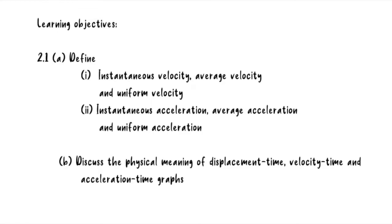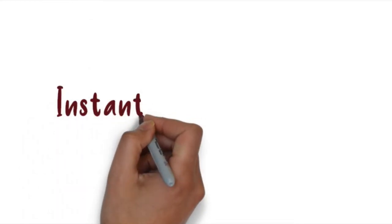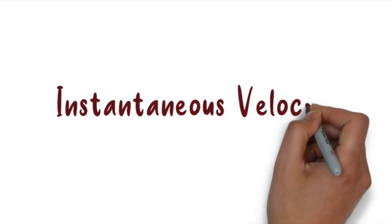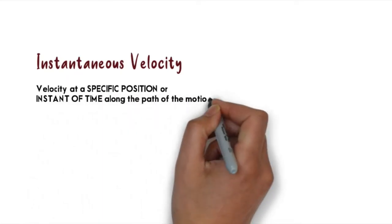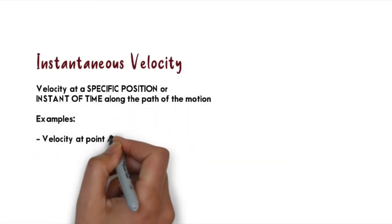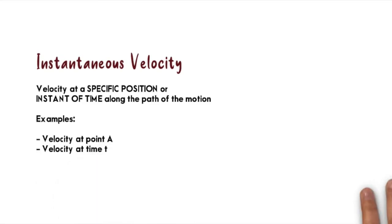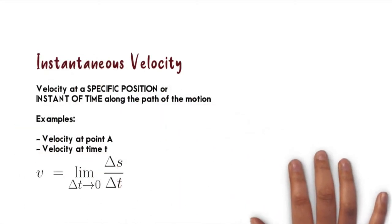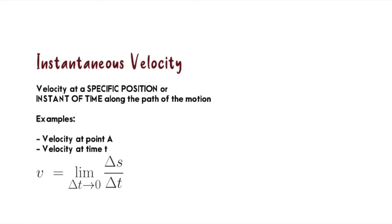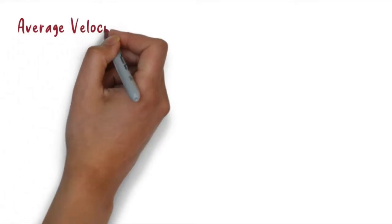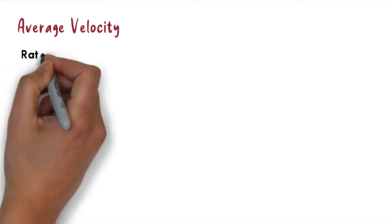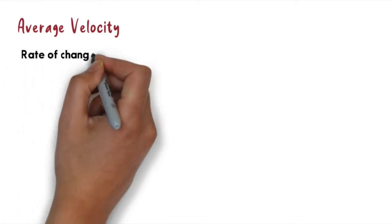The last part is to discuss the physical meaning of different types of graphs. Let's start by defining instantaneous velocity. Instantaneous velocity means the velocity at a specific position or instant of time. Examples are velocity at point A or at time t. This is the equation we use to represent instantaneous velocity — it is the first derivative of displacement in terms of time.